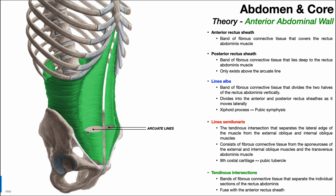The arcuate line is a gap in the rectus sheath. In this image, the rectus abdominis has been completely removed, so we can see the arcuate line clearly. Above it, we have the posterior rectus sheath. Above the arcuate line, from superficial to deep, you have the anterior rectus sheath, then the rectus abdominis, and then the posterior rectus sheath.